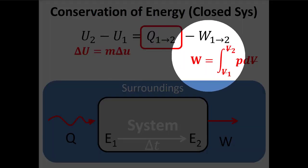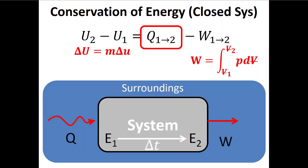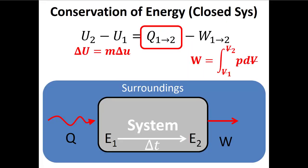We know how to find work in this equation. We're learning different ways to find the change in internal energy. You won't be able to find Q from first principles until you take heat transfer. In this class we're going to use the first law to find Q more often than not, and we can do that if we have a relationship between P and V and if we can find the change in specific internal energy.